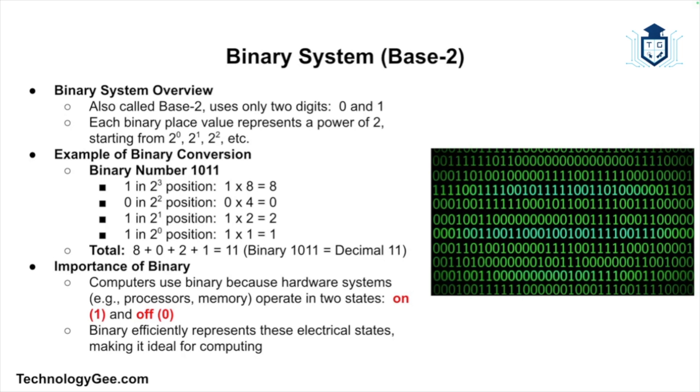Let's take an example. The binary number 1011 is represented like this: the leftmost one is in the 2 to the third position, which equals 1 times 2 to the third which equals 8. The zero is in the 2 squared position, so 0 times 2 squared equals 0. The next one is in the 2 to the first position, so 1 times 2 to the first equals 2. The last one is in the 2 to the zero position, which equals 1 times 2 to the zero which equals 1. Add up all those numbers: 8 plus 0 plus 2 plus 1 equals 11. So the binary number 1011 equals 11 in decimal.